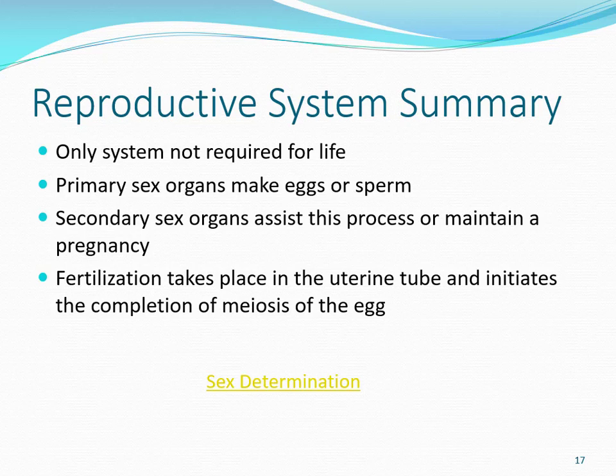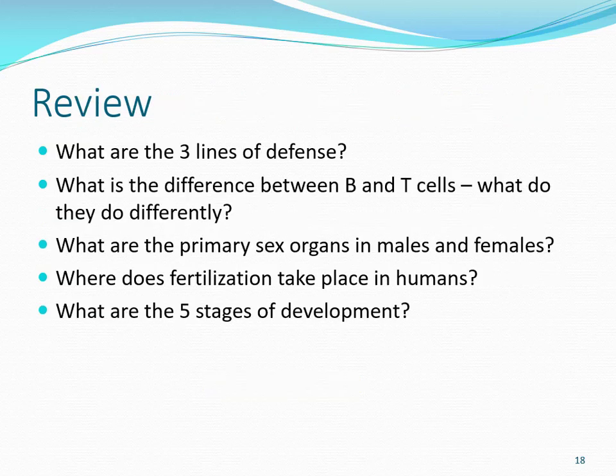There's a good animation at the end you should check out to compare different animal fertilizations. The things you should know include: the three lines of defense, the difference between B and T cells and their specificity, what the primary sex organs are in males and females, where fertilization takes place, and the five stages of development. And that is the end of Goal 6.